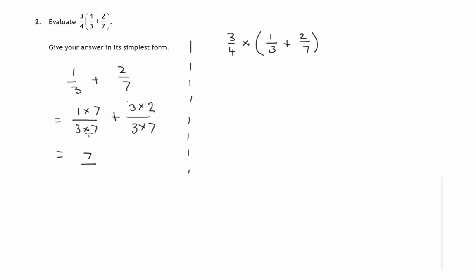So what have we got? We've got seven twenty-firsts plus six twenty-firsts. How many twenty-firsts is that? Seven of them plus six of them - that number of twenty-firsts. So that's 13 twenty-firsts. So we have three quarters of 13 twenty-firsts.